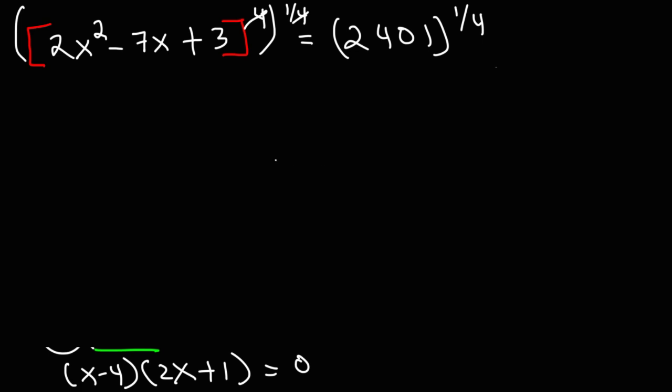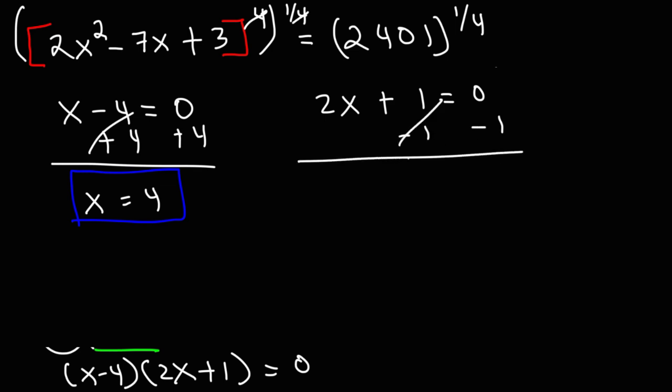So now let's solve the equation. What we're going to do is use the zero product property and set each factor equal to 0. So we're going to set x minus 4 equal to 0, and 2x plus 1 equal to 0. Adding 4 on both sides in the first equation gives us our first answer: x equals 4. For the second one, we subtract 1 from both sides, so we get 2x equals negative 1, and then divide both sides by 2. So we get the second answer, x equals negative 1 half.